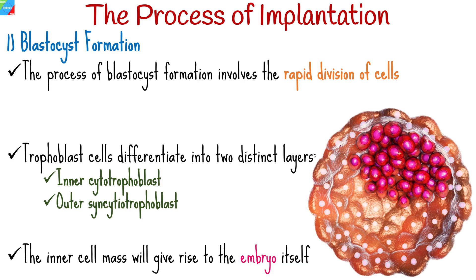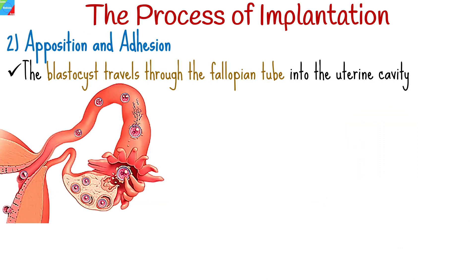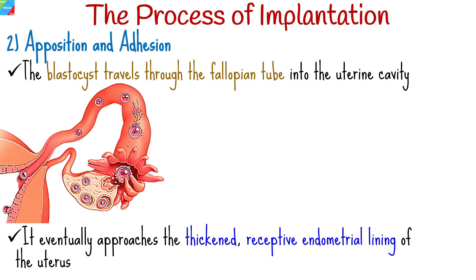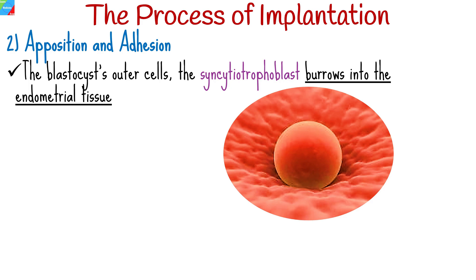Here's how implantation occurs. The blastocyst travels through the fallopian tube into the uterine cavity, eventually approaching the thickened, receptive endometrial lining of the uterus. The blastocyst's outer cells, the syncytiotrophoblast, produce enzymes that help break down the uterine lining, allowing the blastocyst to burrow into the endometrial tissue.